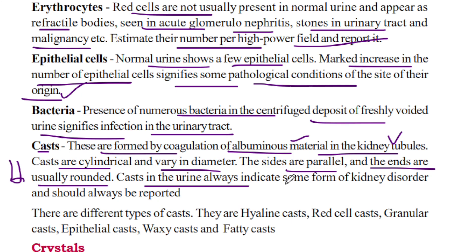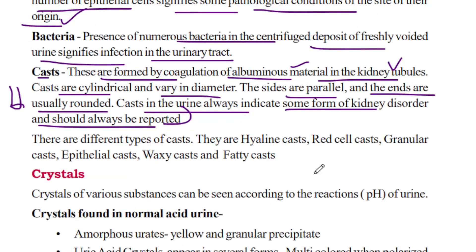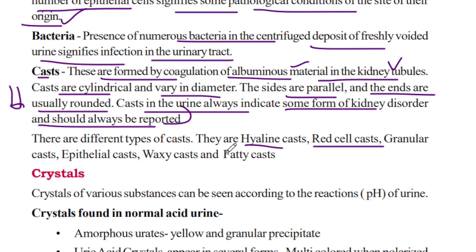Casts in the urine always indicate some form of kidney disorder and should always be reported. Different types of casts include hyaline cast, red cell cast, granular cast, epithelial cast, waxy cast, and fatty cast.